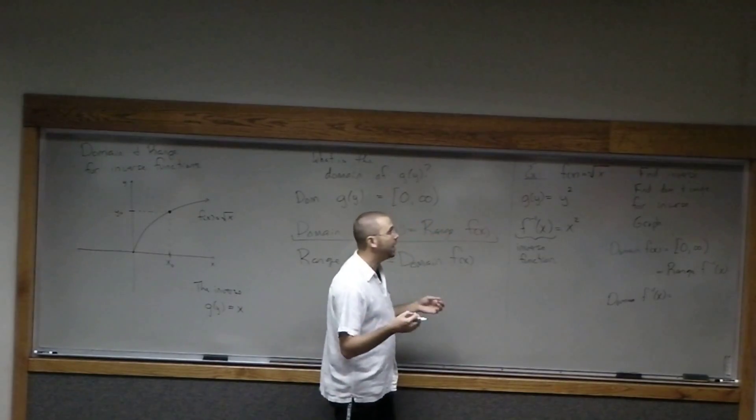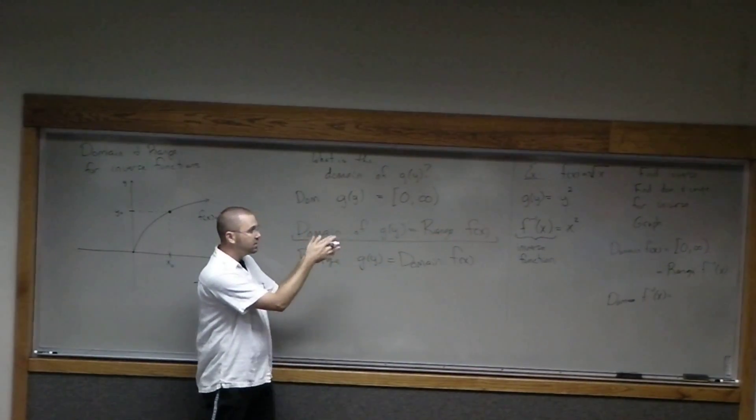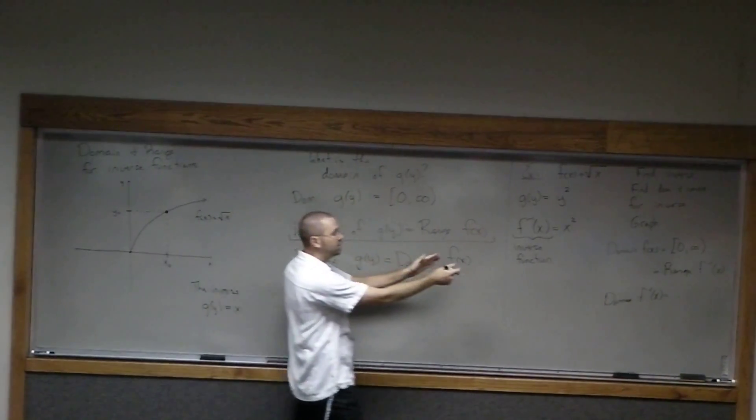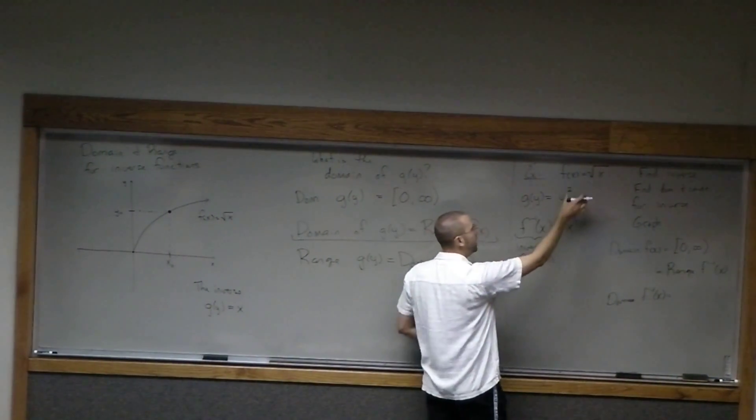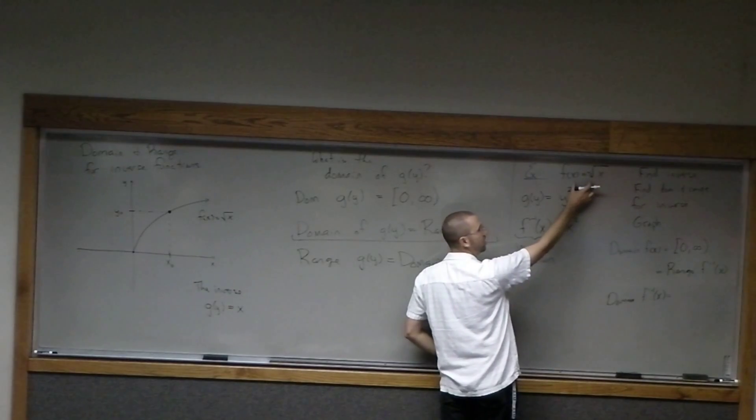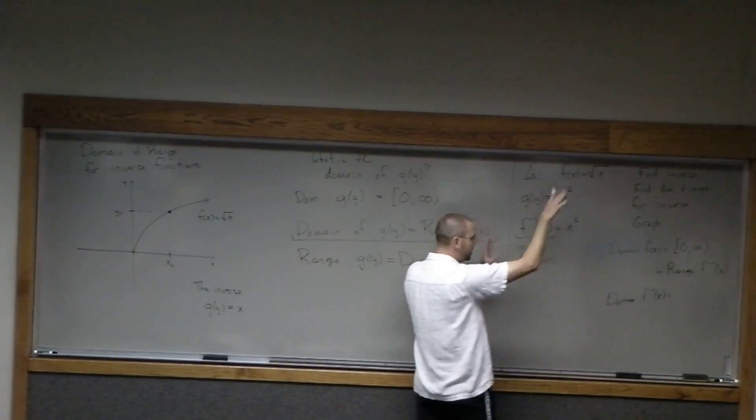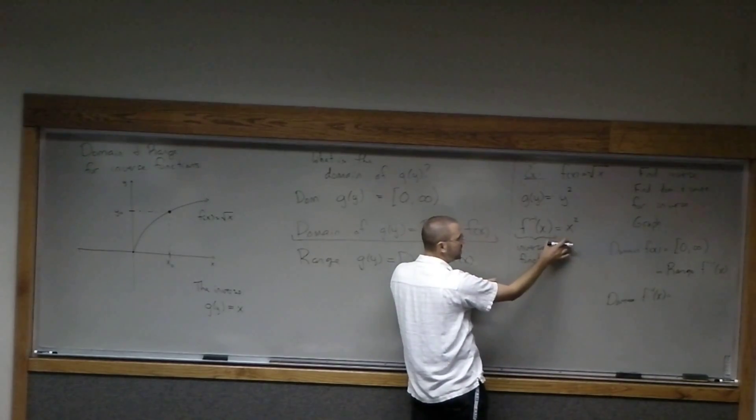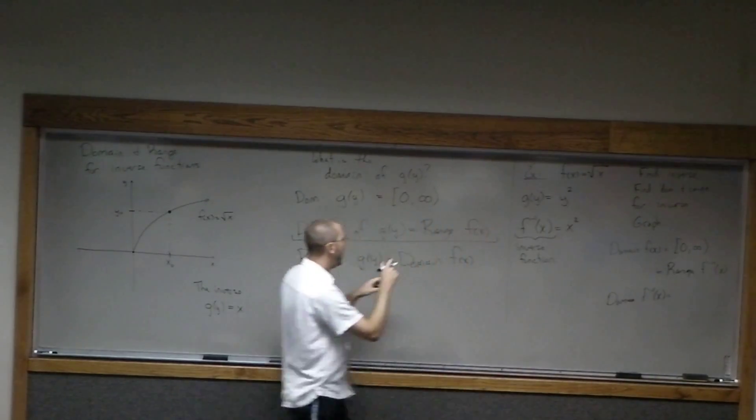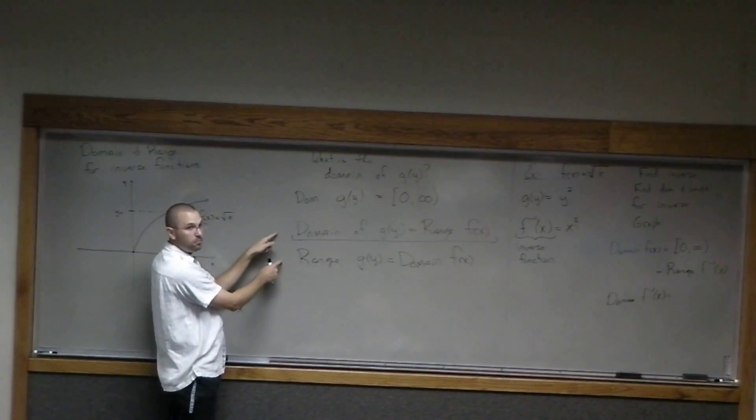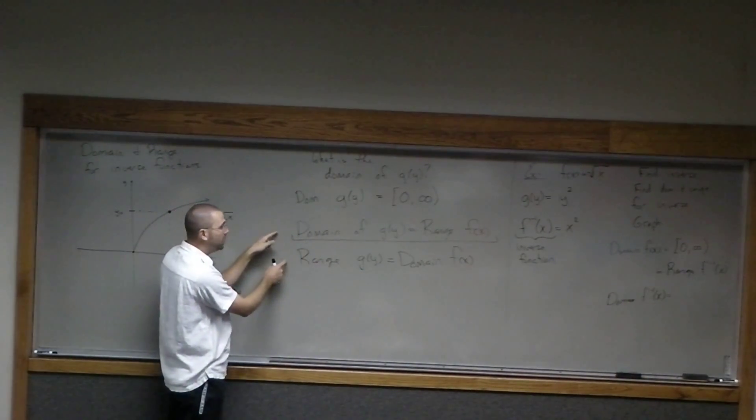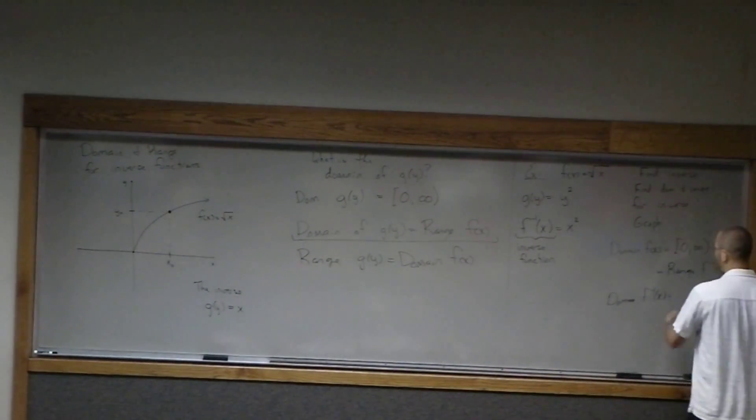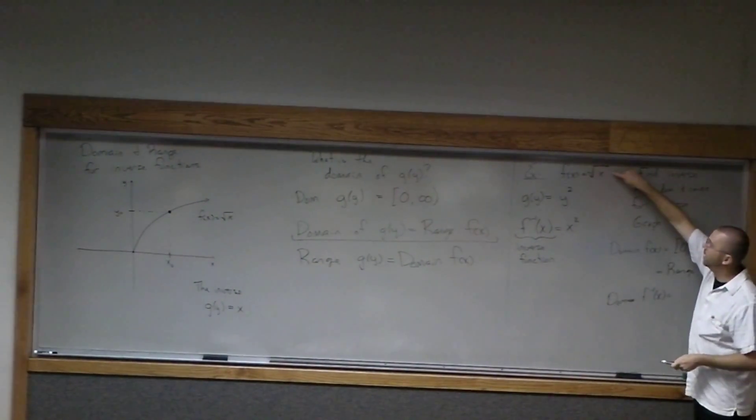But we have to go back and remember this is a function that we obtained from a different function. This is the inverse function that came from this as our starting point. We started with this, did some manipulation, and got out this inverse. But this inverse has to still obey these rules. The domain of f inverse here is equal to the output values of this function.